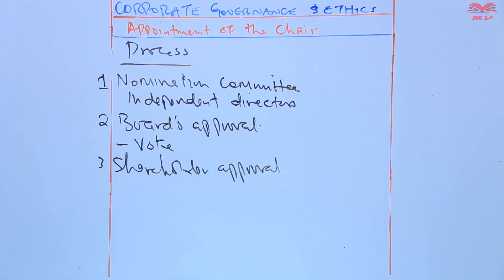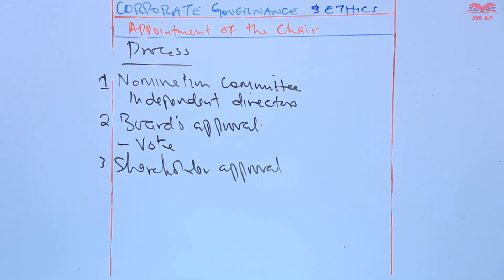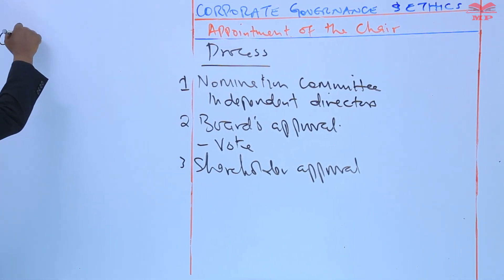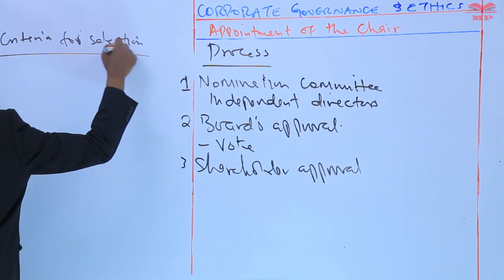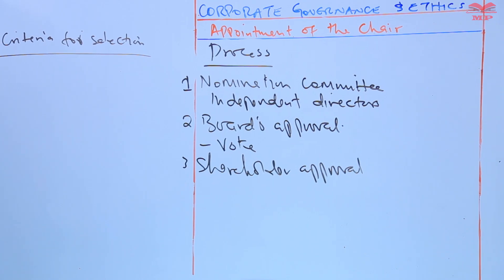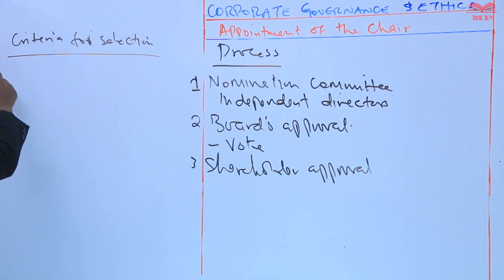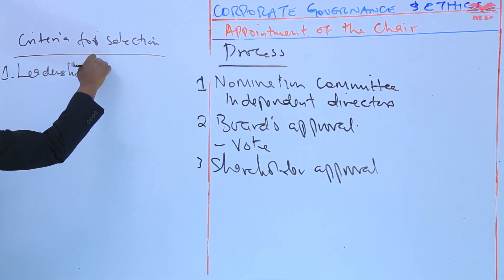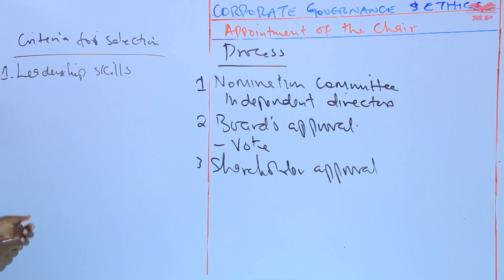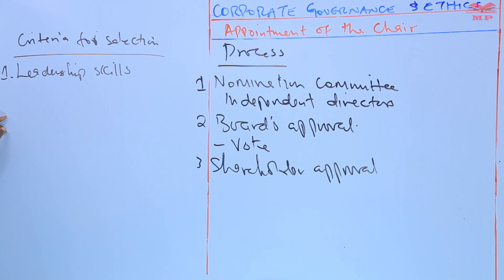Let us now identify the criteria for selection. The first criterion is leadership skills. The nomination committee has to consider leadership skills. The chair should possess strong leadership qualities, including the ability to facilitate discussions, build consensus, and guide the board towards effective decision-making.